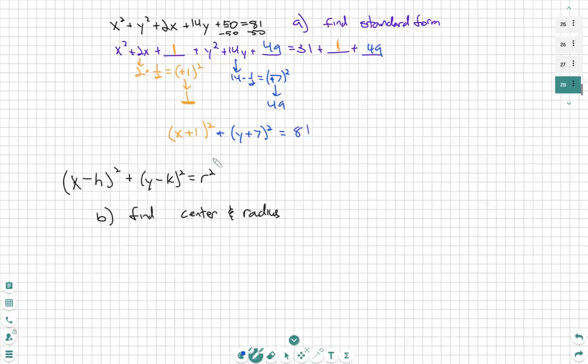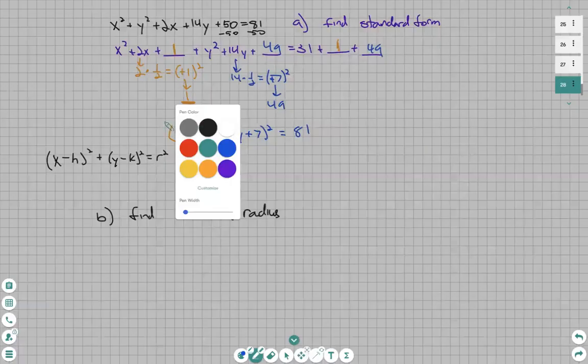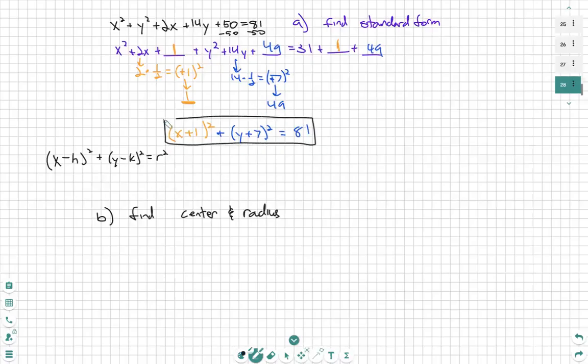There we go. Now we are in our x minus h squared, y minus k squared equals r squared form. So this is going to be the answer to part A of standard form.